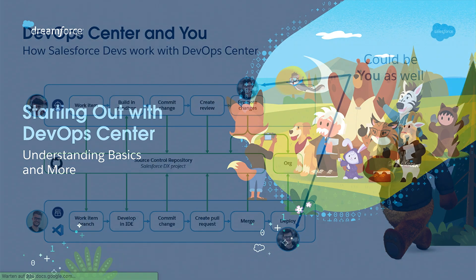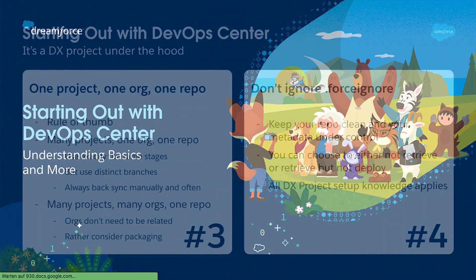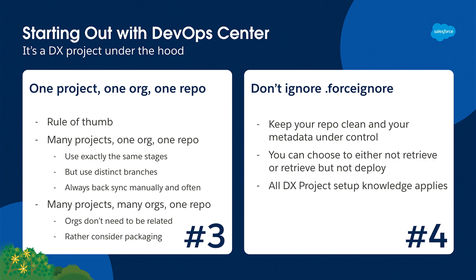When you start out with DevOps Center, you enable it in your org, install the package, and you're done. But then the actual questions arise. The first question is: how many projects will I have? Our rule of thumb is one project, one org, one repo — one destination production org and one repository per project. If you really want several projects for one destination org, make sure you use exactly the same stages in your distinct orgs and use distinct branch names so that eventing does not get confused. Also back sync manually if using the same branch names like QA, UAT, and staging.